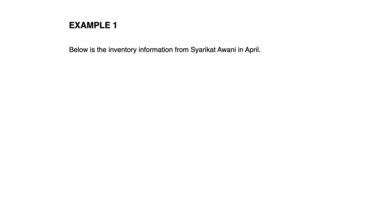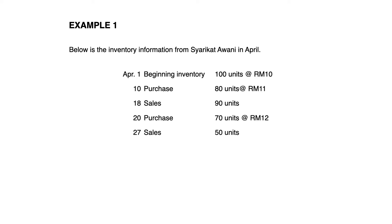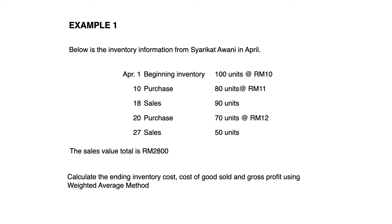We start our tutorial with example one that we used in the previous tutorial. Same goes to these questions. The question asks you to calculate inventory costs, cost of goods sold, and gross profit, but this time using the weighted average method.